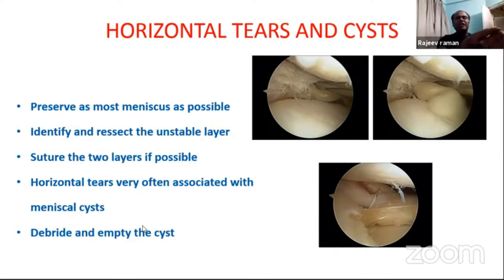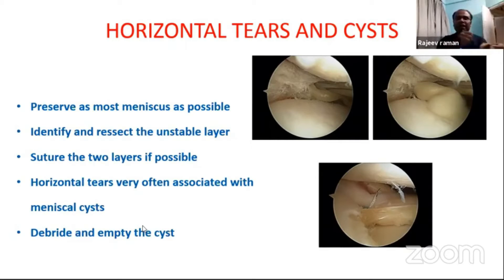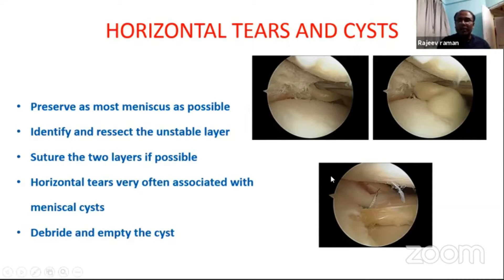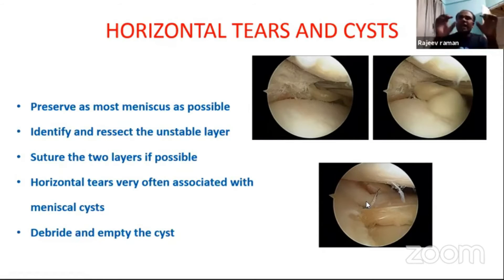Once you debride, you will see two layers — one is an unstable layer which is moving with your probe, and a stable layer which is not moving. Identify and resect the unstable layer — the layer which is coming out with your probe. After that removal, you will see two layers of the meniscus. Try to suture with a vertical mattress or a horizontal mattress suture. Here you can see this is a horizontal tear associated with a meniscus cyst. Debride the cyst and fix it with a vertical mattress suture, because that will make your meniscus rim more stable — and this meniscus rim is very important to prevent degenerative changes in your knee joint.